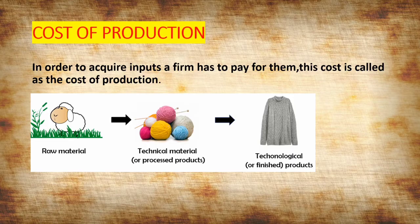Now, it is important for us to know what is input and what is output. Input refers to all the materials and resources used to produce a product — raw materials, labor, capital — all of these are inputs. Then, what is output? Finally, when you use the inputs, the ultimate product that is produced is the output. Here, the wool from the sheep and the thread are the inputs, and the final product — the sweater — is the output.